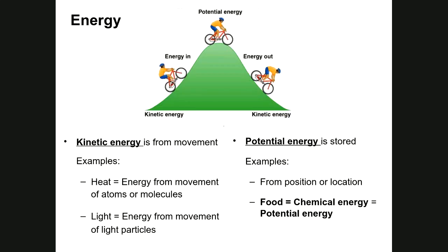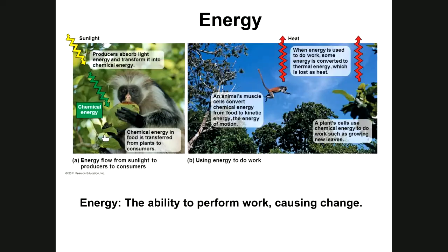There are two forms of energy: kinetic energy, which is the energy of movement, and potential energy, which is stored energy. There must be potential energy for there to be kinetic energy. In cell and molecular biology, instead of saying potential energy we use the term chemical energy — they are one and the same. Both photoautotrophs and heterotrophs obtain nutrients, some of which serves as chemical energy — stored energy that will be used to do work.